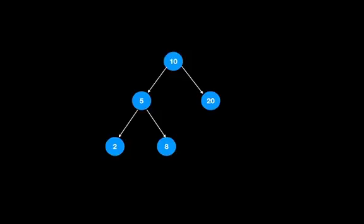Let us look into the problem in which two nodes of a binary search tree are swapped and we have to correct the binary search tree. Let this be our binary search tree. Let us swap any two nodes — let us swap 8 and 20. Now the tree structure obtained is not a binary search tree anymore, and we have to make some adjustments to make it a BST again.